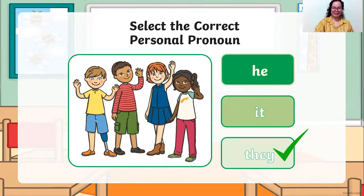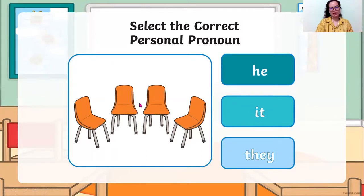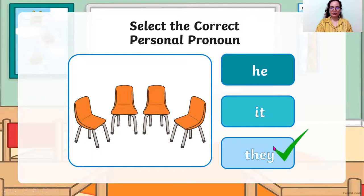Next. Chairs — how many chairs? There are four chairs, so if it is many, we are going to use a plural personal pronoun. He and it are singular personal pronouns. So the answer is they — they are chairs.